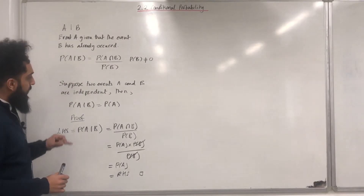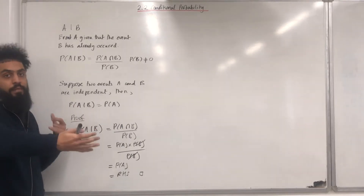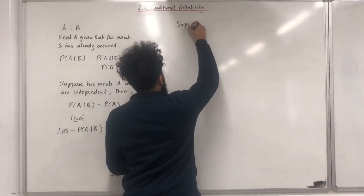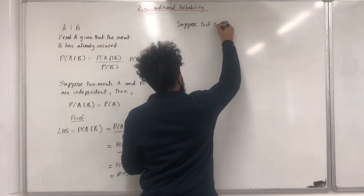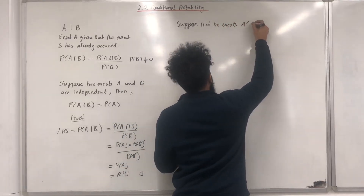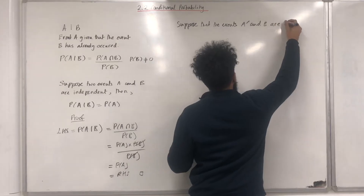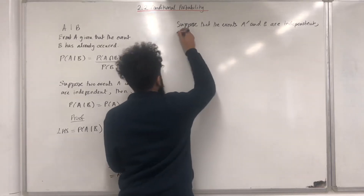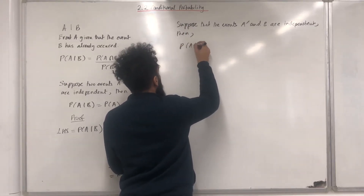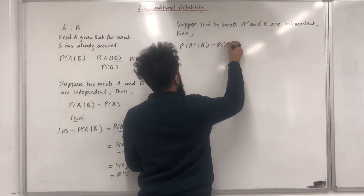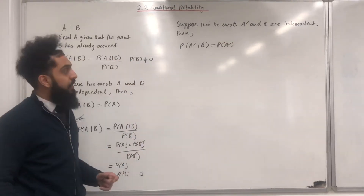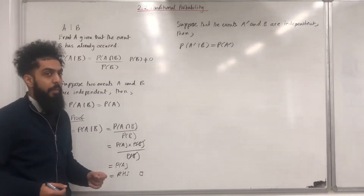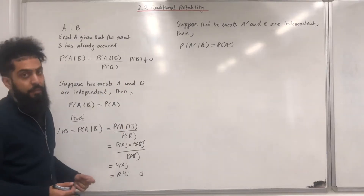Now, this particular statement can be generalized to any two events that are independent. For example, let's suppose that the events not A and B are independent. Then, probability not A given B is equal to probability not A. So, not A is not affected by B happening. Probability not A given B is equal to probability not A. We can actually prove this statement.